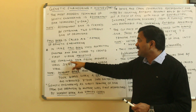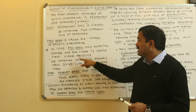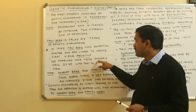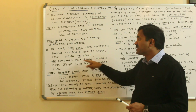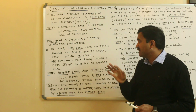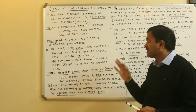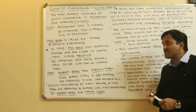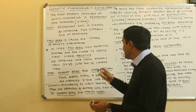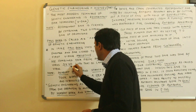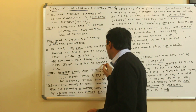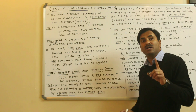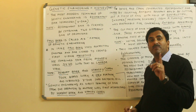What Paul Berg did was combine DNA isolated from the monkey virus SV40 with that of the lambda virus, and thereby constructed the recombinant DNA.